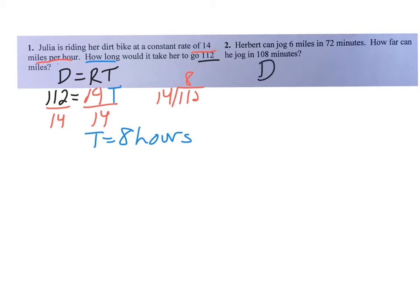Number 2, D equals RT, same thing. This one, it doesn't give you the miles per hour or the rate. You have to calculate it. So that right here, miles per hour, is miles per minute, and it's in minutes. This piece is 120 minutes, so that is a time, or 180 minutes. So that is a time, 108 minutes. And the D is what I'm looking for, because it says how far can I go.